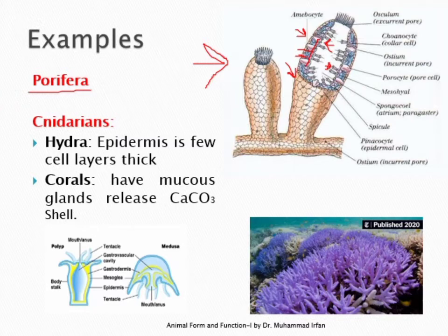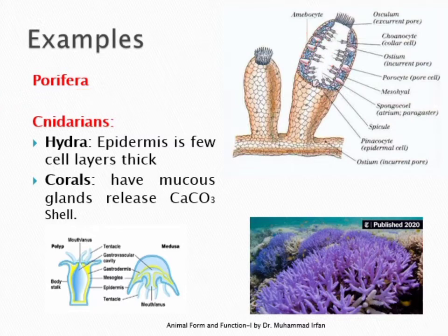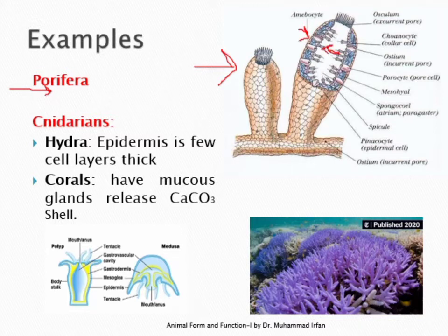In cnidarians, such as hydra, the epidermis forming the integument is a few cell layers thick. In corals, the epidermal layer has modified cells that release calcium carbonate, which forms the shells of corals. So in Porifera, pinacocytes form the integument; in hydra, the epidermis is a few cell layers thick; and in corals, the epidermis may have glandular cells that release calcium carbonate to make shells.